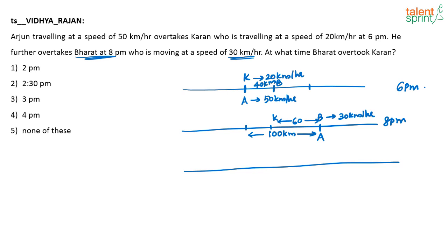We keep backtracing to see where they could actually meet. At 4 p.m., 2 hours before 6 p.m.: Karan is at the 6 p.m. position minus 40 km of travel, and Bharat is also 60 km behind his 6 p.m. position. In these 2 hours, Bharat would have covered 60 km, so Bharat was 20 km further back.